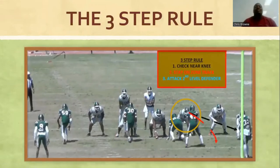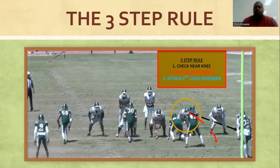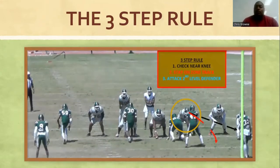So what is the three-step rule? The three-step rule is a timer that we put in the head of that uncovered offensive lineman to know when it's time to work up to that second level defender. We already know the rules: the uncovered lineman is to check the near knee of the adjacent defensive alignment to make sure it's not coming towards him. The second thing is to stay on his track as he works up to the second level. And the third thing, of course, is to attack that second level defender — usually after you take your three-step rule.